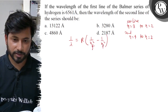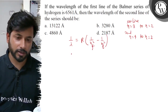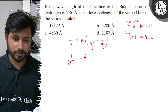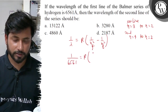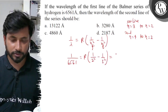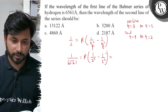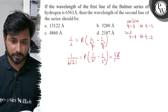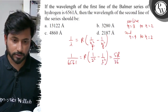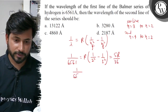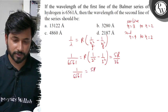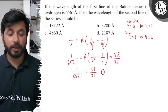For the first line, 1 by 6561 equals to R times (1 by 2 squared minus 1 by 3 squared). Solving: that is 1/4 minus 1/9, which gives 9 minus 4 over 36, equal to 5R by 36. So equation 1 is: 1 by 6561 equals to 5R by 36.